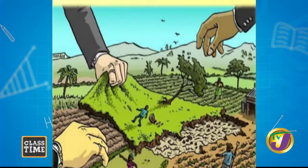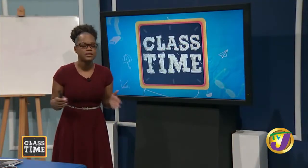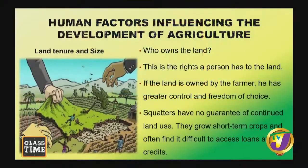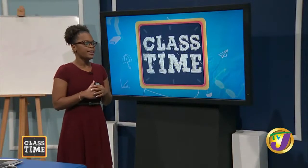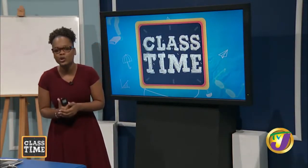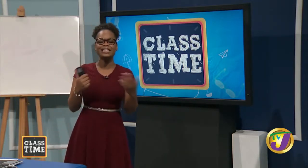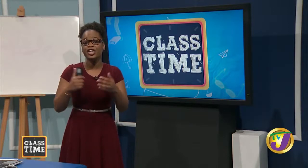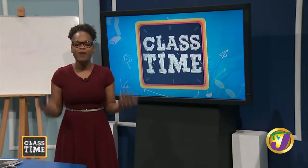Squatters living on someone else's land cannot determine how they spread out. They tend to practice in small portions with short-term or cash crops that grow quickly to provide immediate turnover. It is also very difficult for squatters to access loans needed to maximize farm yields, simply because they have no legal rights to the land.